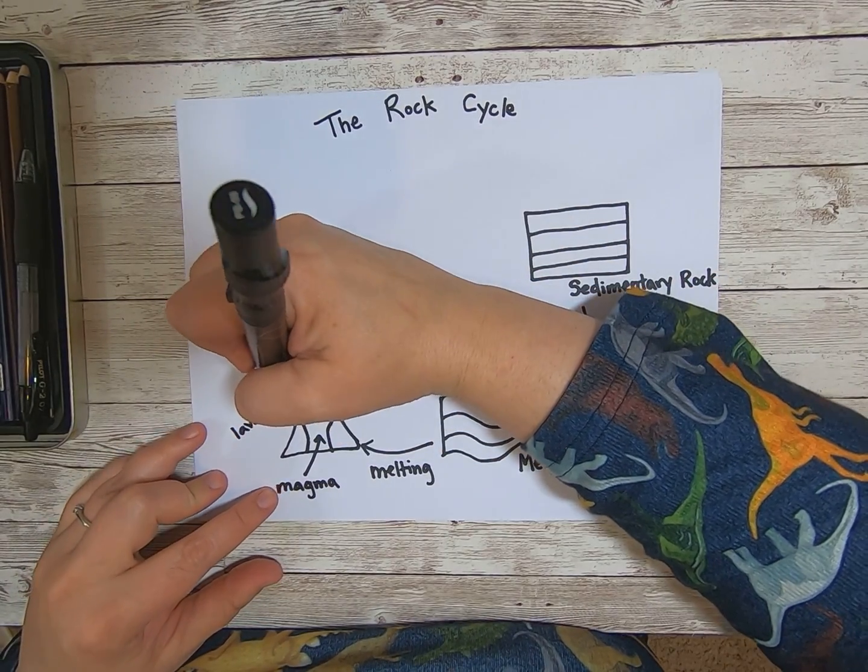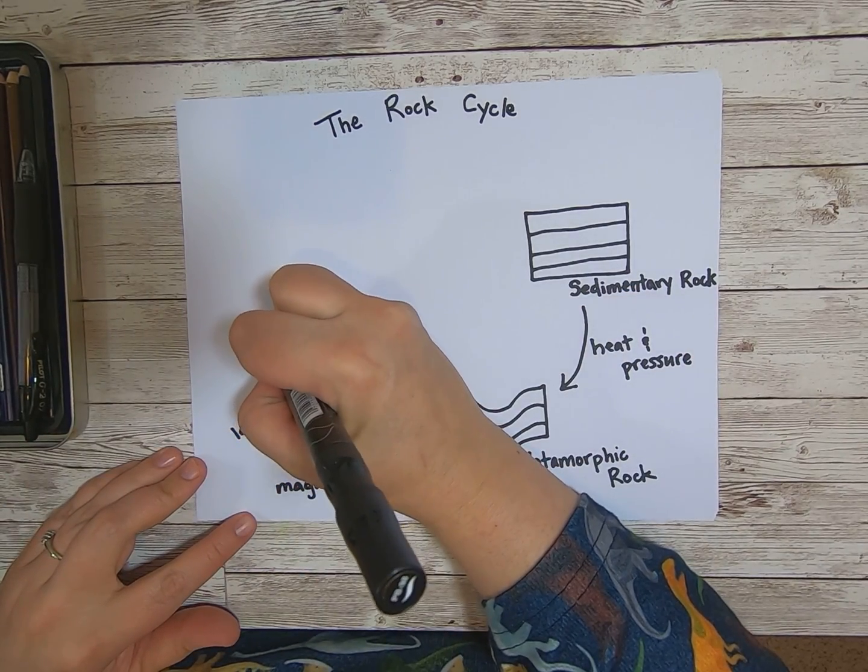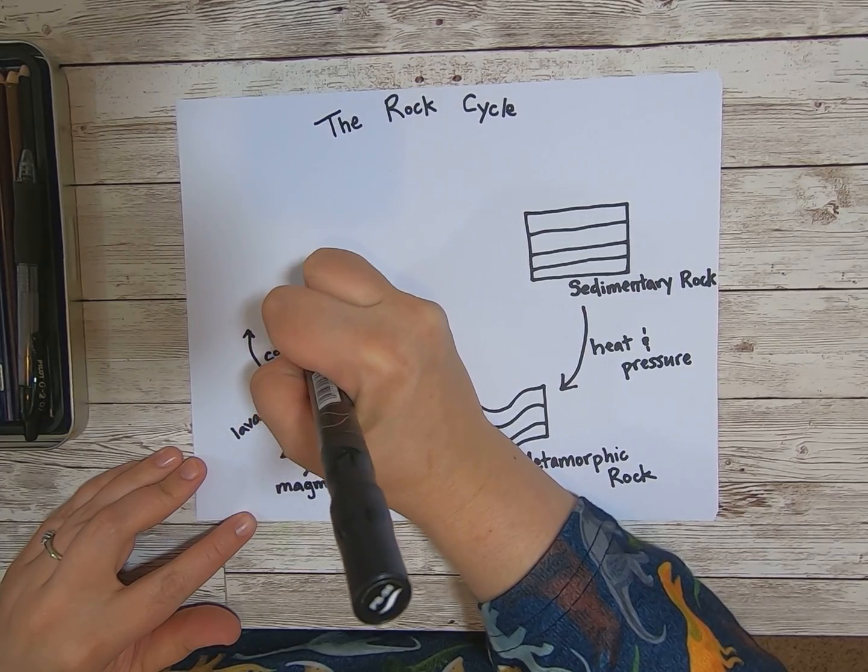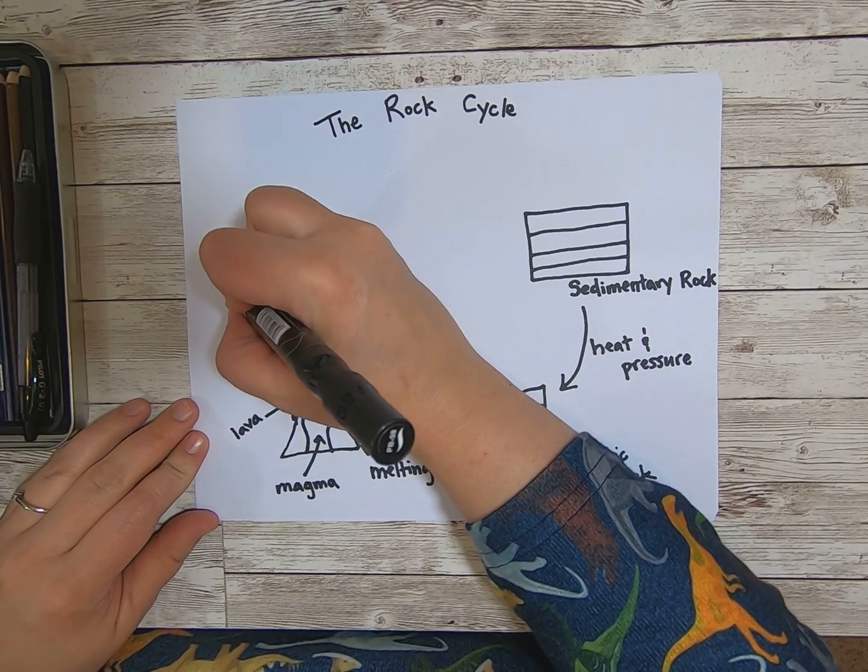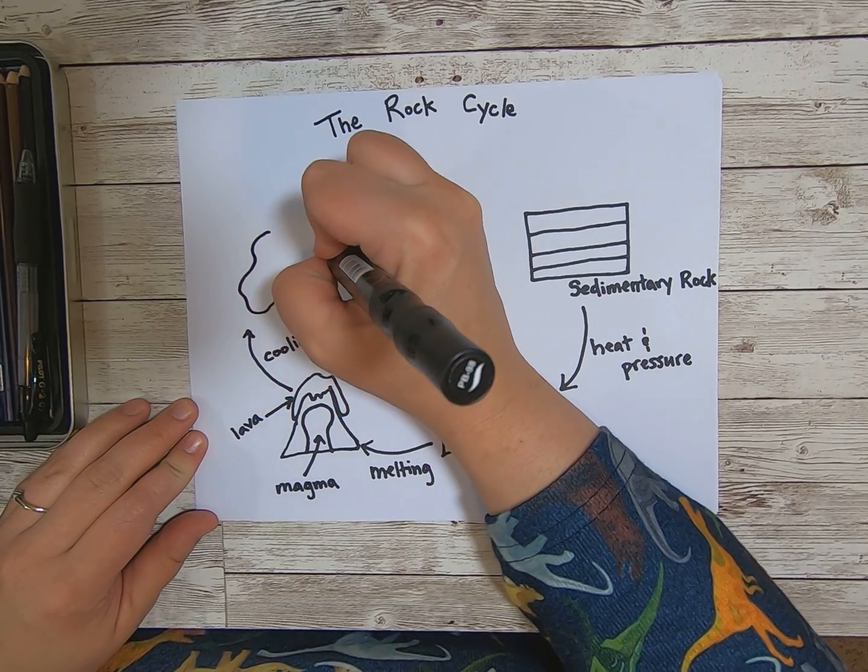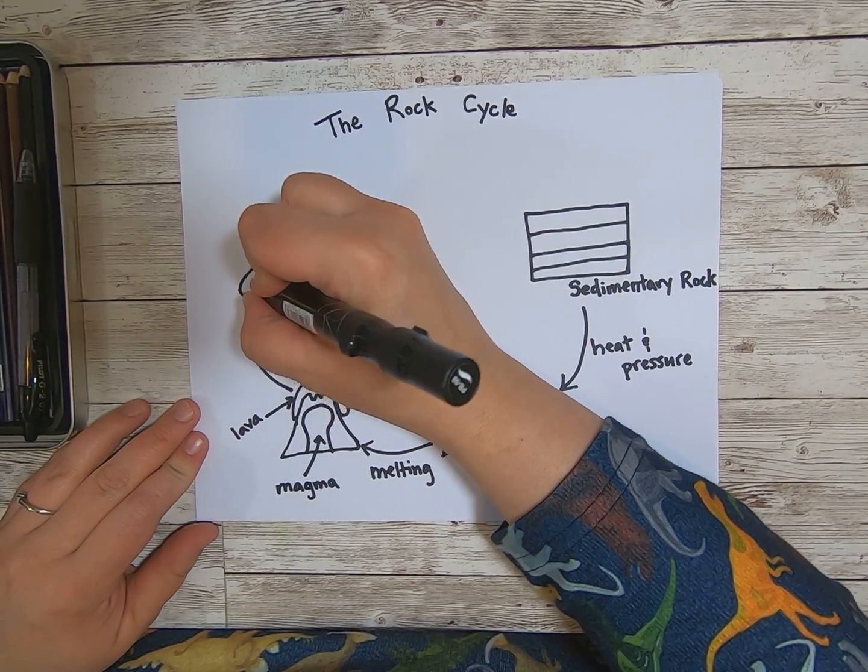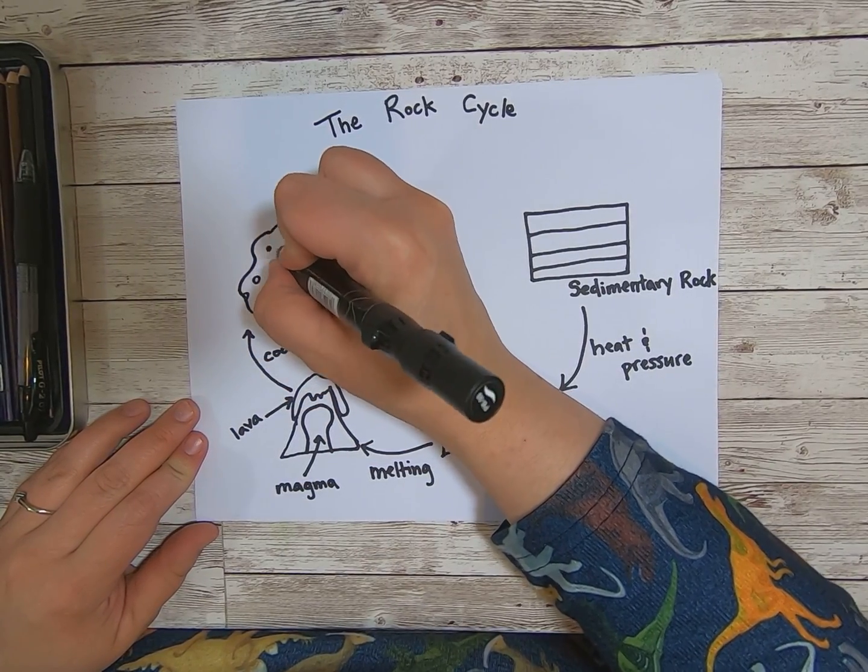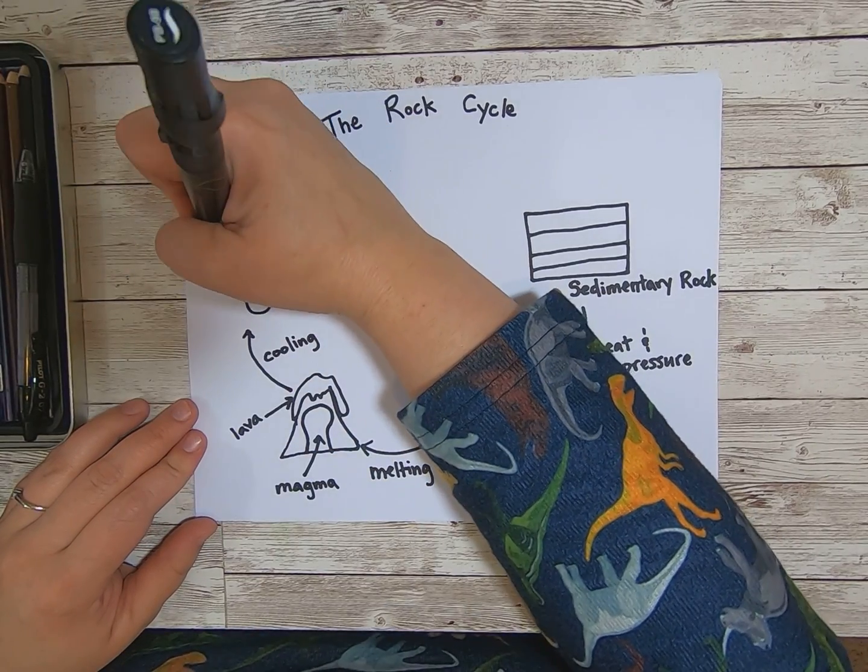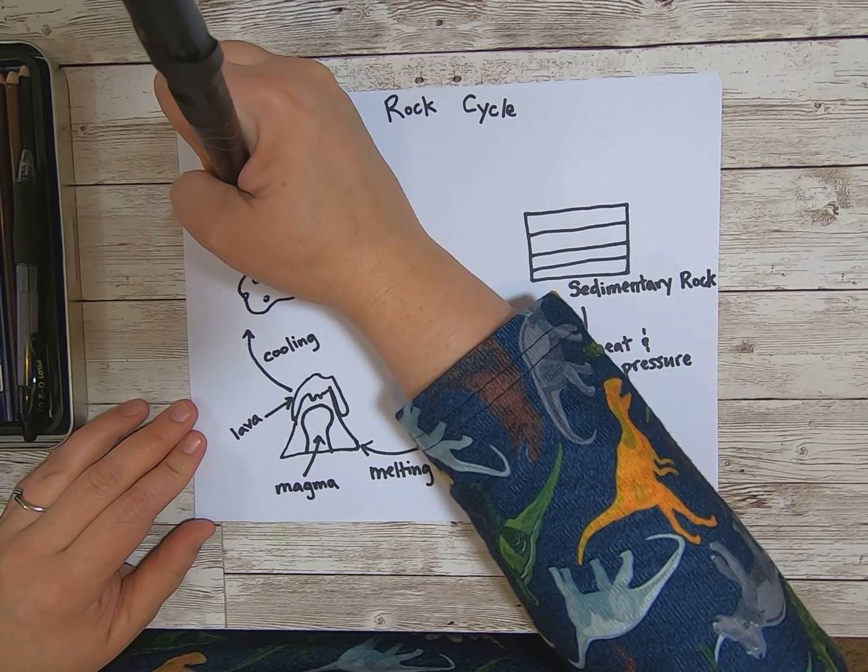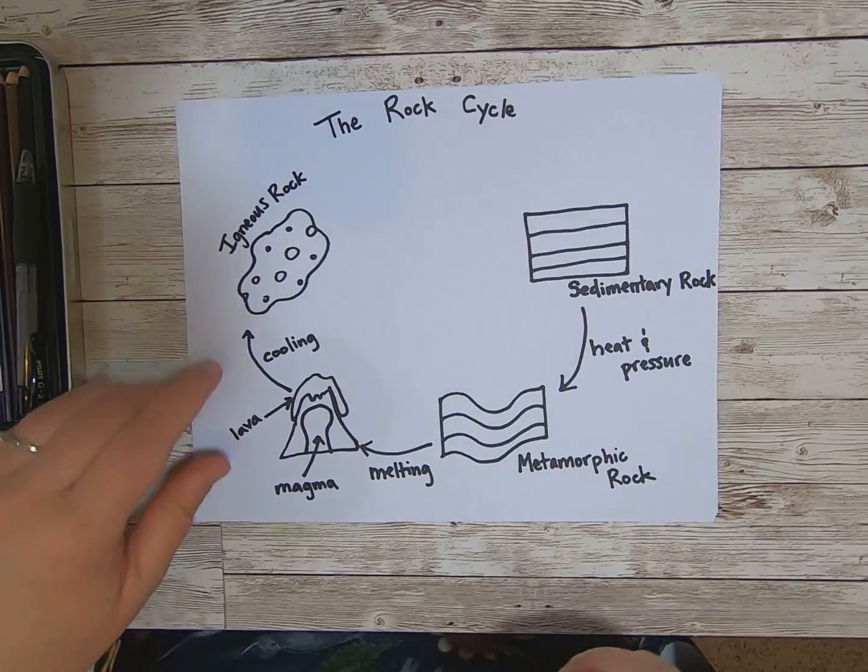Now that lava that's come out of the volcano, it's going to do some cooling. Cooling. And we're going to draw another rock right here, ready? Make a nice rock, and in my rock I'm going to add some bubbles. Lots of bubbles, some big bubbles, some small bubbles. This is my igneous rock. See my igneous rock?